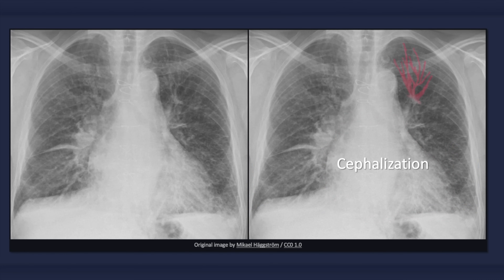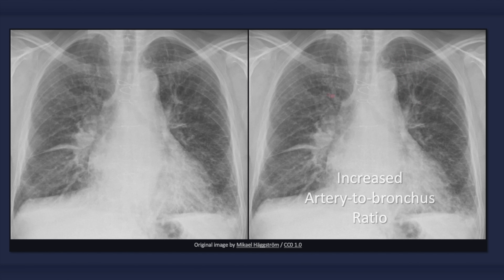Vascular redistribution is one of the first signs of congestive heart failure. Increased blood flow to pulmonary vessels in the upper lung zones results in an increase in size relative to blood vessels in the lower lung zones. This caudal-to-cranial redistribution of blood flow should only be inspected for on an erect X-ray, since equalization of blood flow may occur in the supine position. One way it can be identified is by the discovery of a superior lobe artery with a greater diameter than its accompanying bronchus.